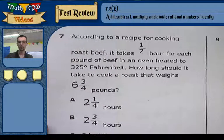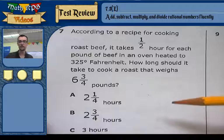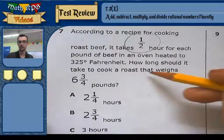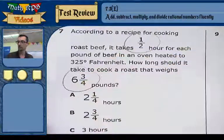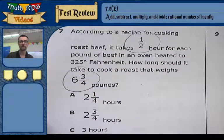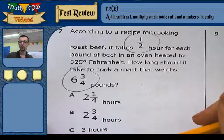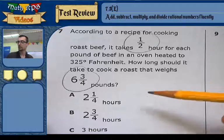Question 7. According to a recipe for cooking roast beef, it takes half an hour for each pound of beef in an oven heated to 325 degrees Fahrenheit. How long should it take to cook a roast that weighs 6 and 3 quarters pounds? Okay, alright. So every pound here is going to be cooked for half an hour.